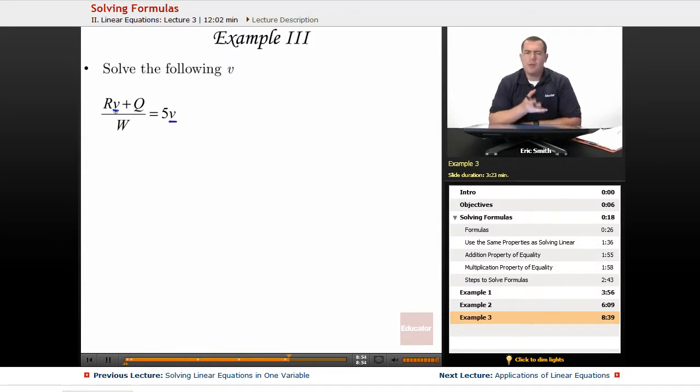When you have more than one copy of the variable like this, you really have to work on getting them together before you can get into the isolating process. So let's take care of our fractions, and then see if we can actually get those v's together and work on isolating it. Because if we only isolate one of them, then it's not really solved, we'd still have a v in there.